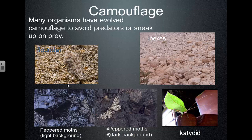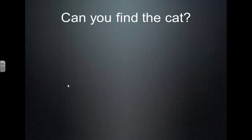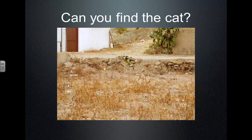A katydid is an insect whose body looks exactly like a leaf. Even cats have camouflage — its pattern blends right into firewood. You can barely see it.